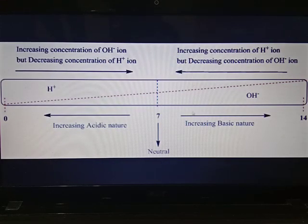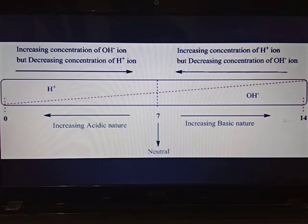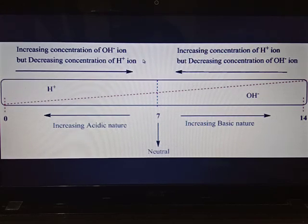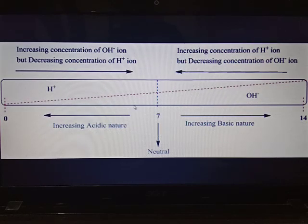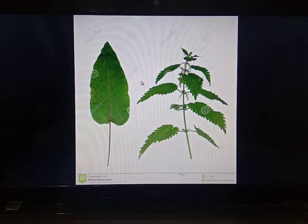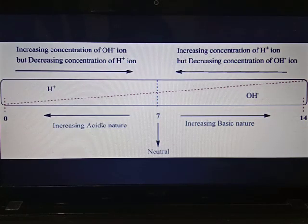Bases with pH near 7 have less OH- ion concentration, while solutions with pH near 14 have high OH- ion concentration. So as the pH increases from 0 to 14, the H+ ion concentration decreases and the OH- ion concentration increases, and vice versa. As we move from pH 14 to pH 0, H+ ion concentration increases and OH- ion concentration decreases.